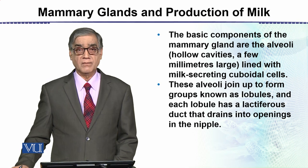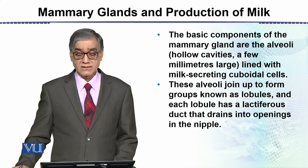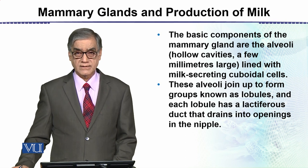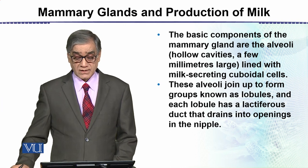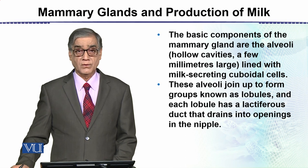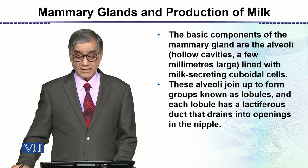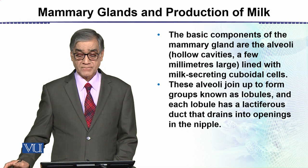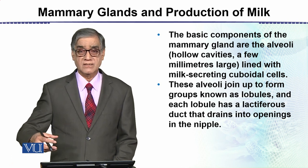The basic components of the mammary gland are the alveoli, which are hollow cavities a few millimeters large, lined with milk-secreting cuboidal cells, as shown in the diagram. These alveoli join up to form groups known as lobules, and each lobule has a lactiferous duct that drains toward the opening in the nipple.